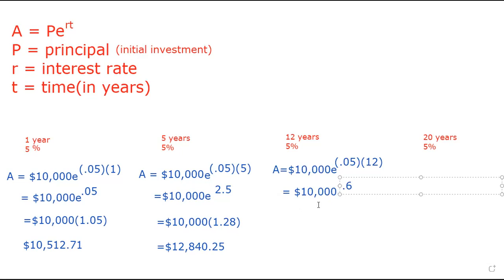Now e raised to the 0.6. Let's see what that's going to give us. I'm doing the calculator. Yeah, I'm doing this with you all as we do it. So e to the 0.6, let's look at it. That's going to be 1.82 and some change, which is, once we multiply that together, we have $18,221.19.